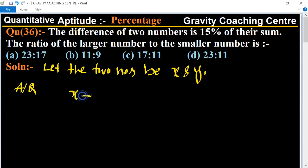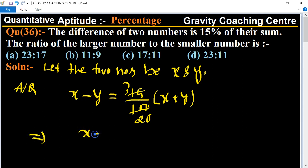So x minus y equals 15% of x plus y. Simplifying by dividing both sides by 5, we get x minus y upon x plus y equals 3 upon 20.